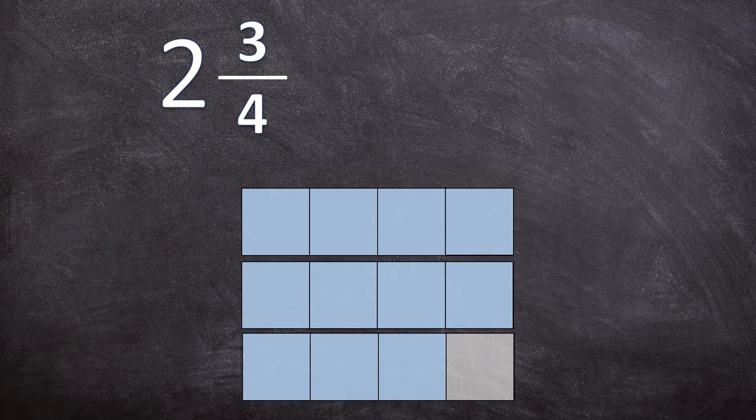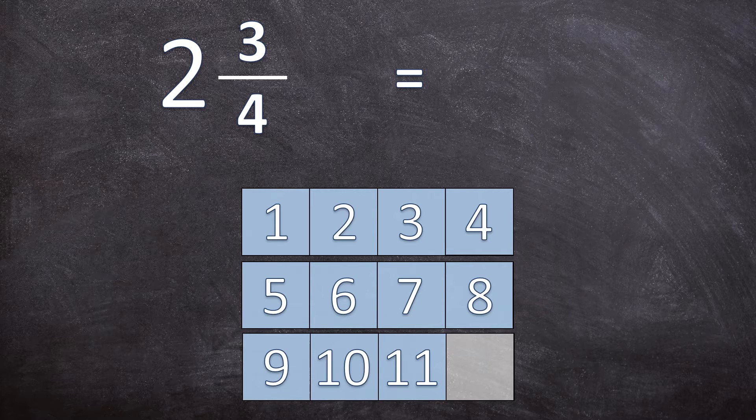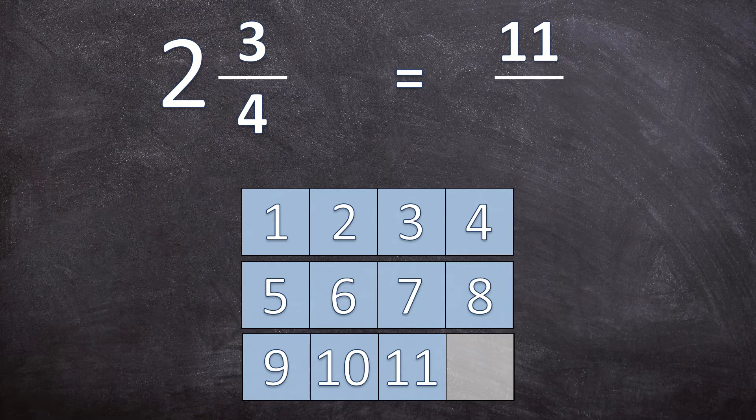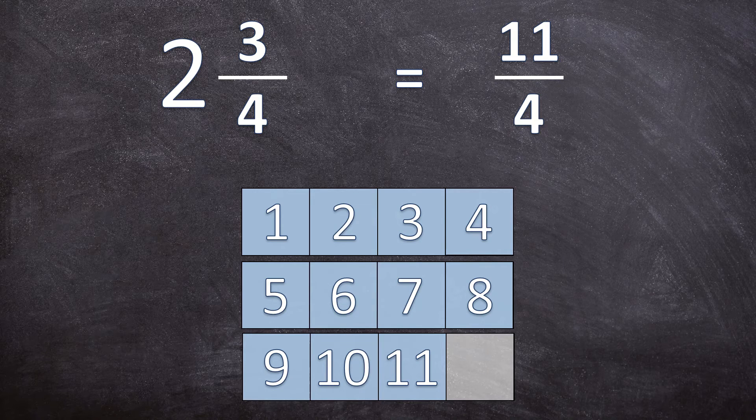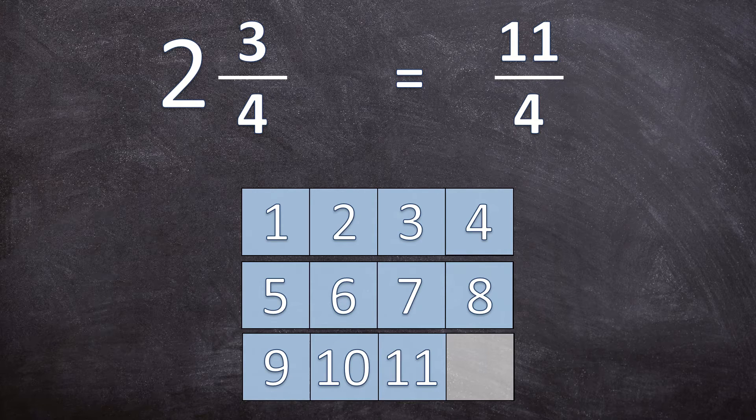Now that we've represented this mixed number, let's convert it into an improper fraction. Remember, an improper fraction is when the numerator is bigger than the denominator. How many pieces are colored in? Exactly 11 pieces. So the numerator is going to be 11 over what is the denominator? The denominator stays four because the denominator represents how many parts one whole is cut into.